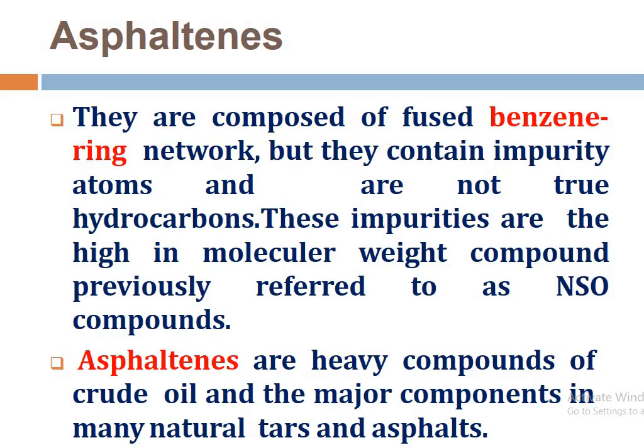The fourth series is asphaltenes. They are composed of a fused benzene network but contain impurity atoms and are not purely hydrocarbons. These impurities are high-molecular-weight compounds referred to as NSO compounds (nitrogen, sulfur, oxygen). Asphaltenes are heavy compounds of crude oil and a major component in many natural tars and asphalts.